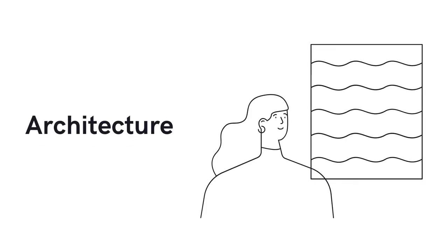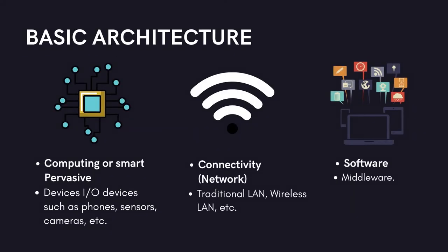Now we are going to discuss the architecture of a pervasive computing system. The basic architecture of any pervasive computing system consists of three areas. The first is computing or smart pervasive devices — these are input and output devices such as phones, sensors, cameras, and so on. These devices collect data and transfer it to the software via the network.